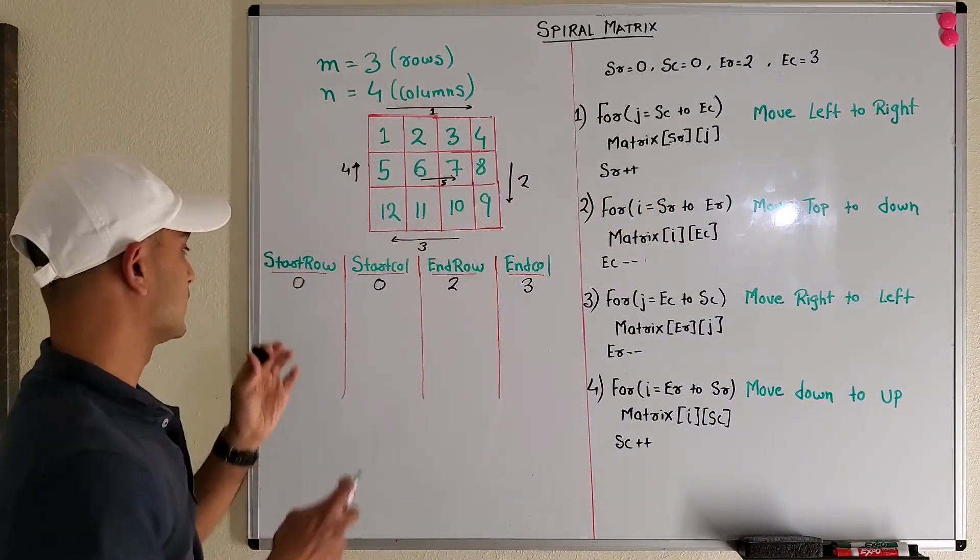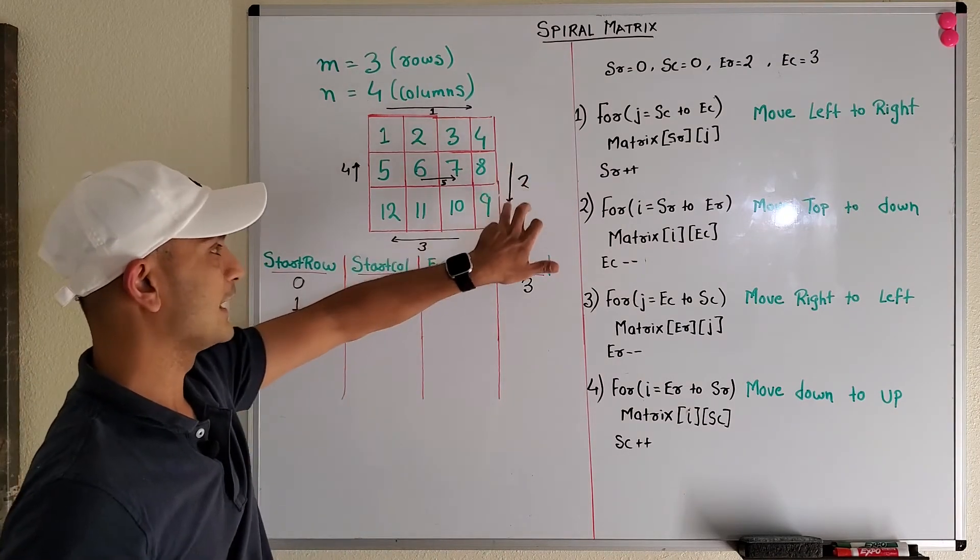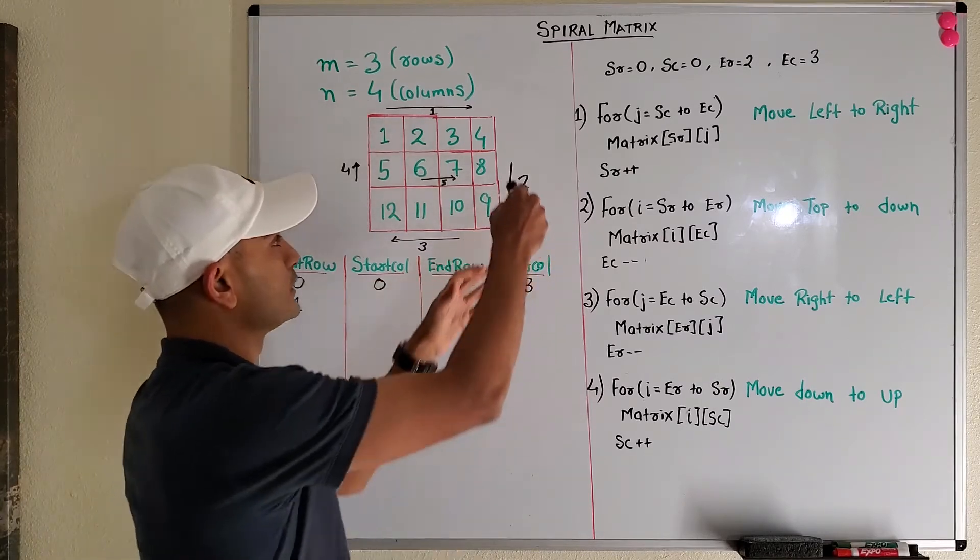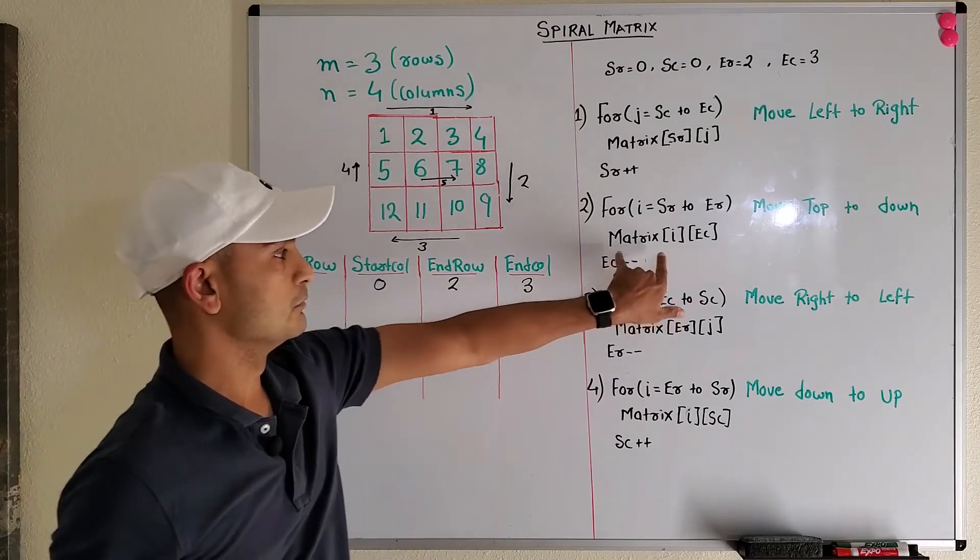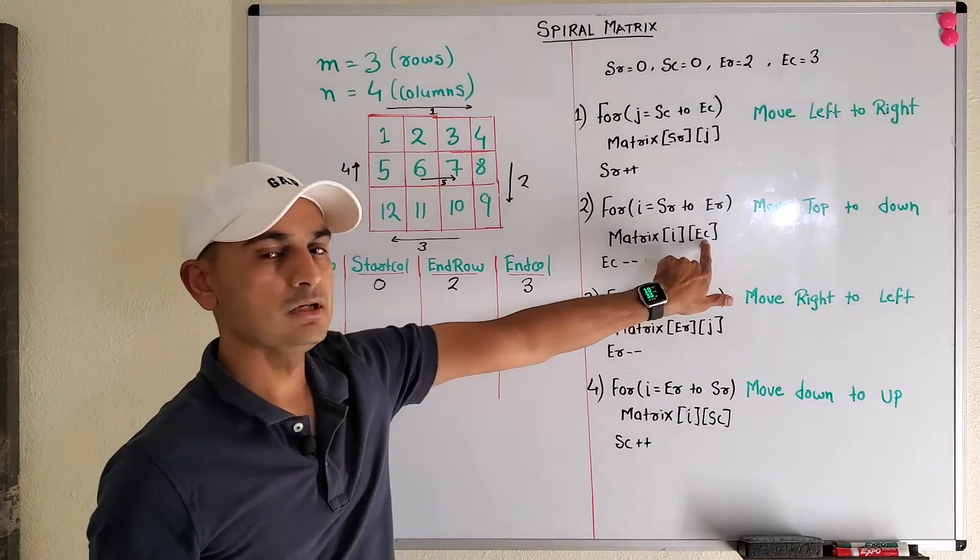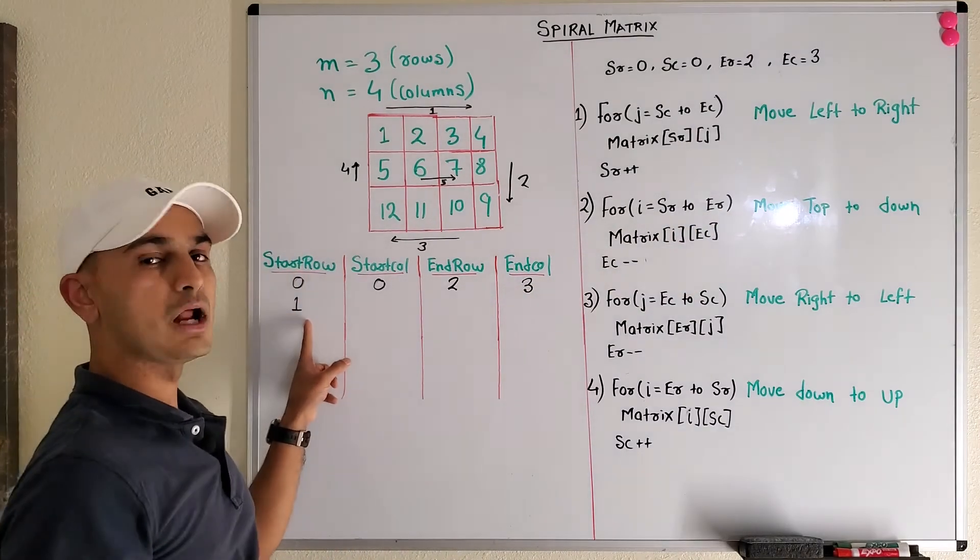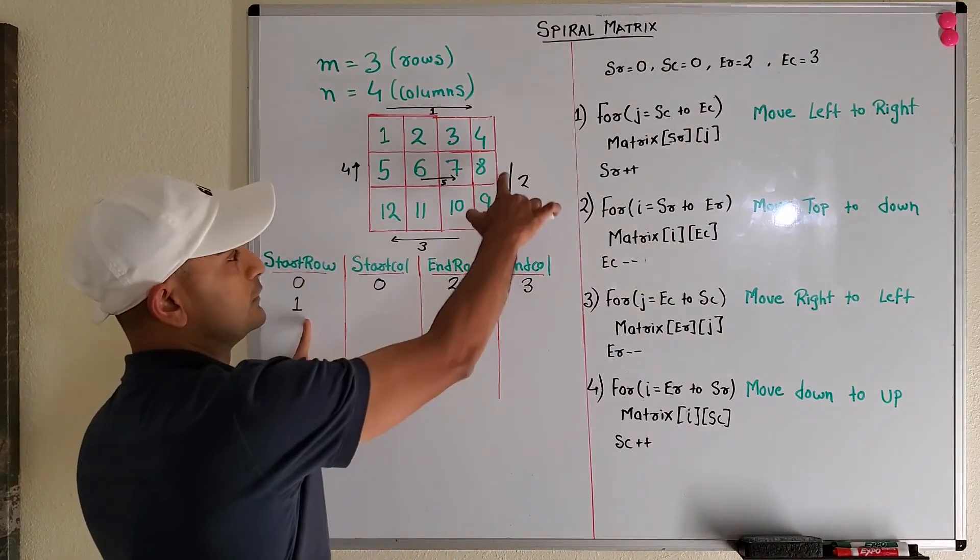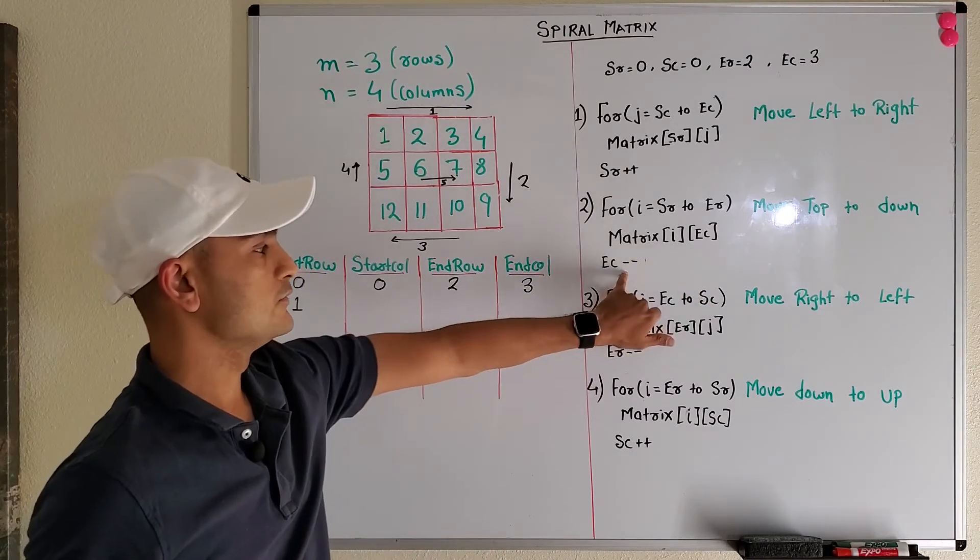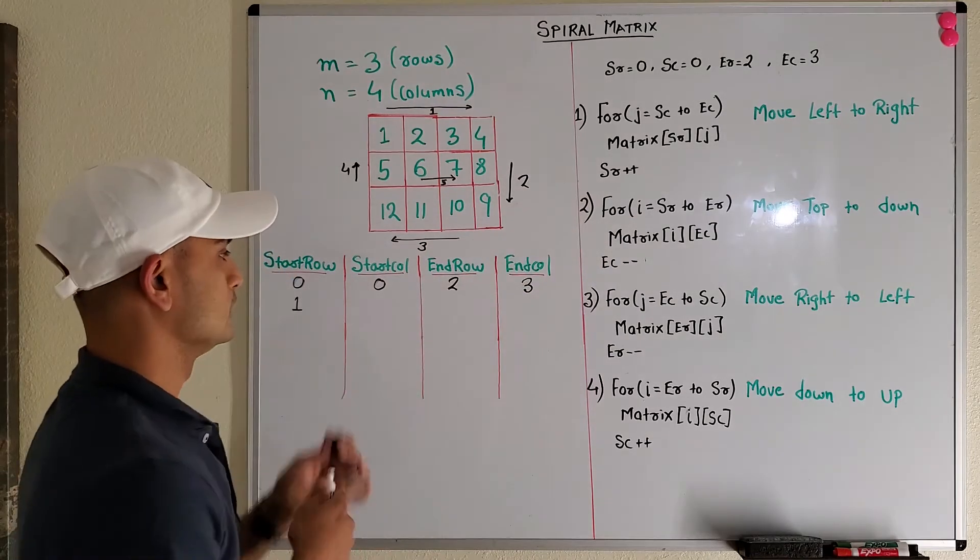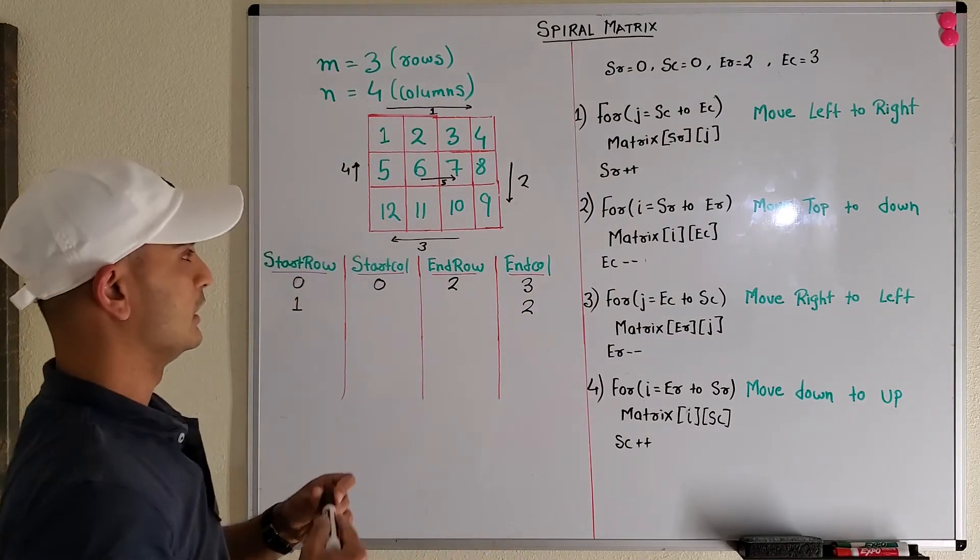Next, we need to access eight and nine, which means we need to access the last column and the rows. So matrix of end column, and we loop from start row to end row. Notice that our start row is one and end row is two, so we'll just access eight and nine in the end column. Then we do end column minus minus, so this is done. End column becomes two.